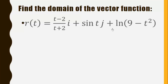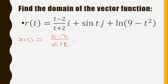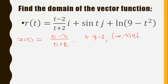We repeat the same process for a second vector function. This time x(t) equals (t minus 2) divided by (t plus 1)(t plus 2). For this rational function, the domain excludes values where the denominator is zero, so t is not equal to negative 2. In interval form, this is negative infinity to negative 2 open, union negative 2 to positive infinity open.